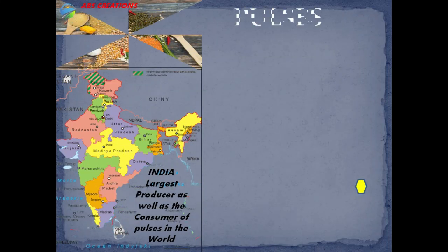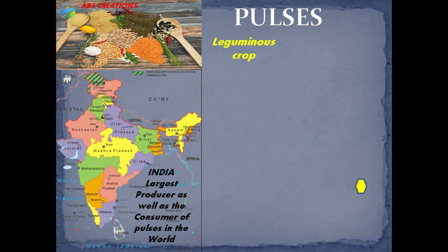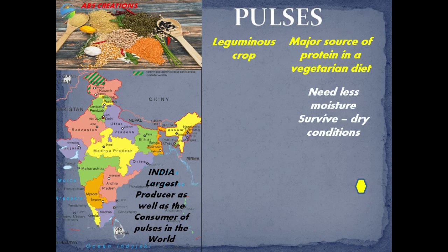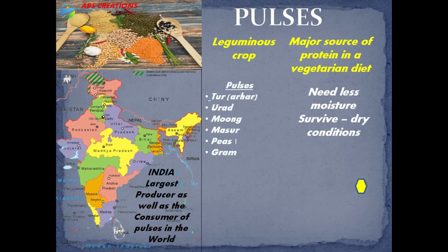The next food crops are pulses. Pulses come under the category of leguminous crops. India is the largest producer as well as the consumer of pulses in the world. Pulses act as a major source of protein in the vegetarian diet. In areas of dry conditions and less moisture, pulses are cultivated, as they require less moisture and can survive in dry conditions. The various pulses grown in India are tur, urad, moong, masur, peas and gram.